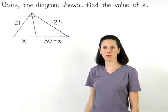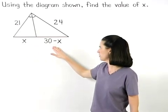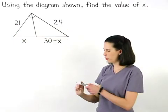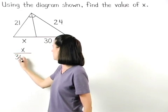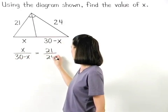So we can set up the proportion: x is to 30 minus x as 21 is to 24. We write x over 30 minus x equals 21 over 24.